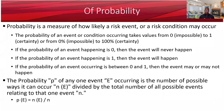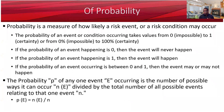What do we mean by that? If the probability of an event occurring is 0, you can say that the event will never occur. If the probability of an event occurring is 1 or 100%, then you can say that the event will definitely occur.